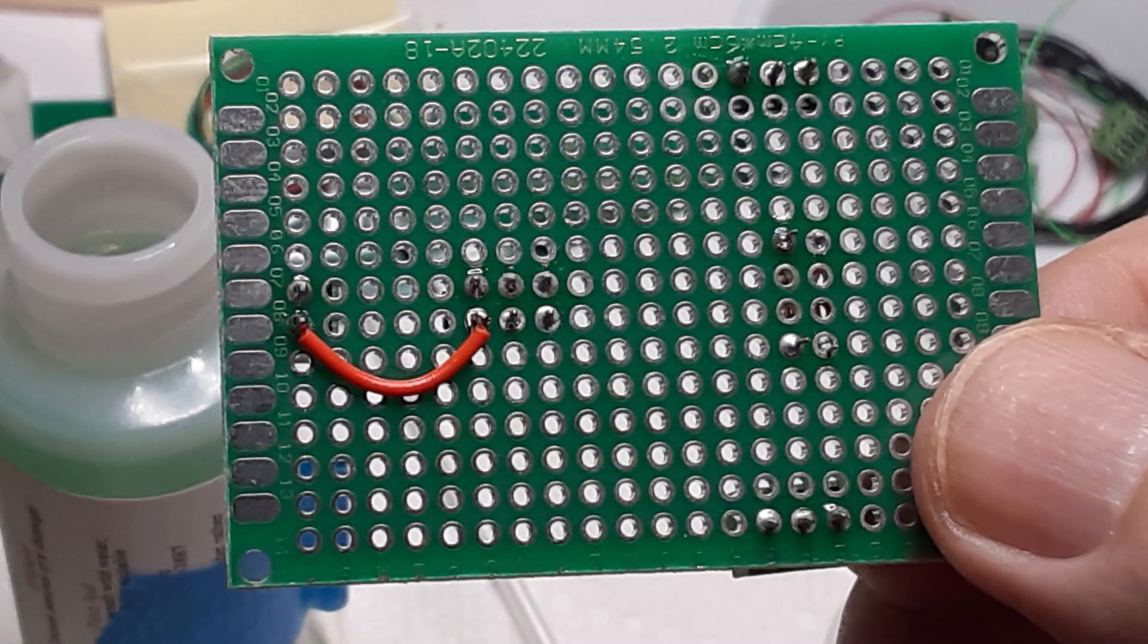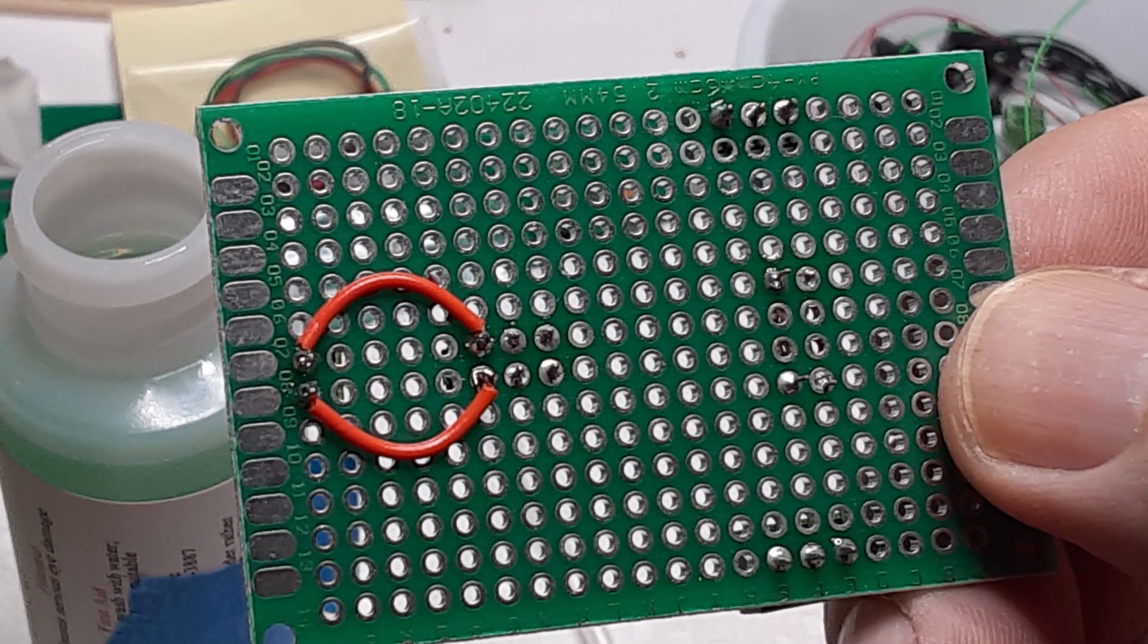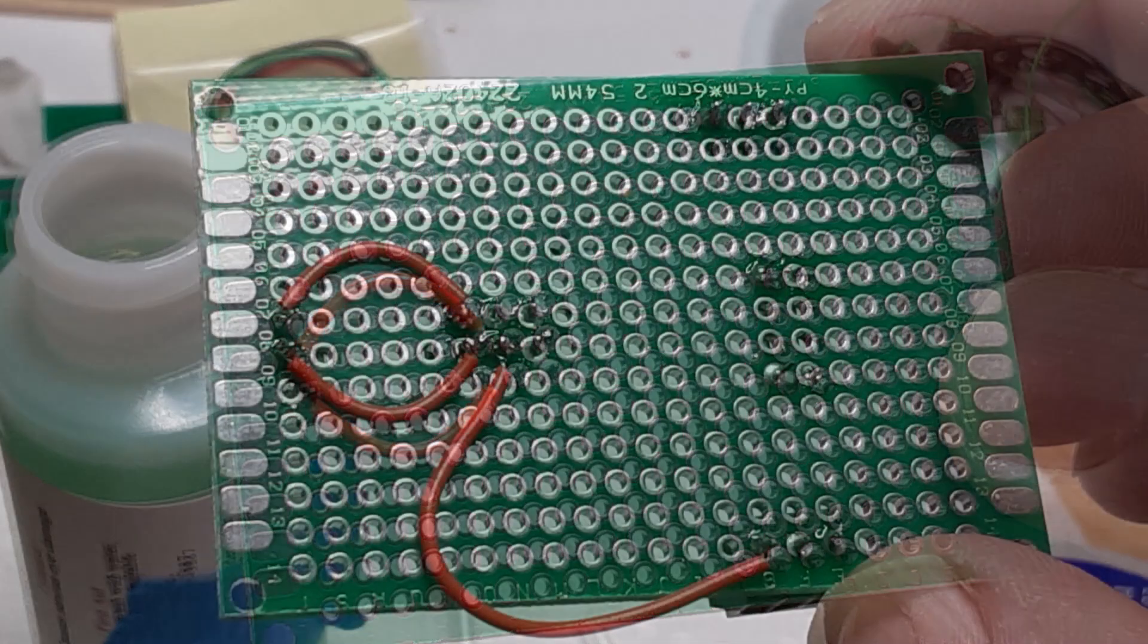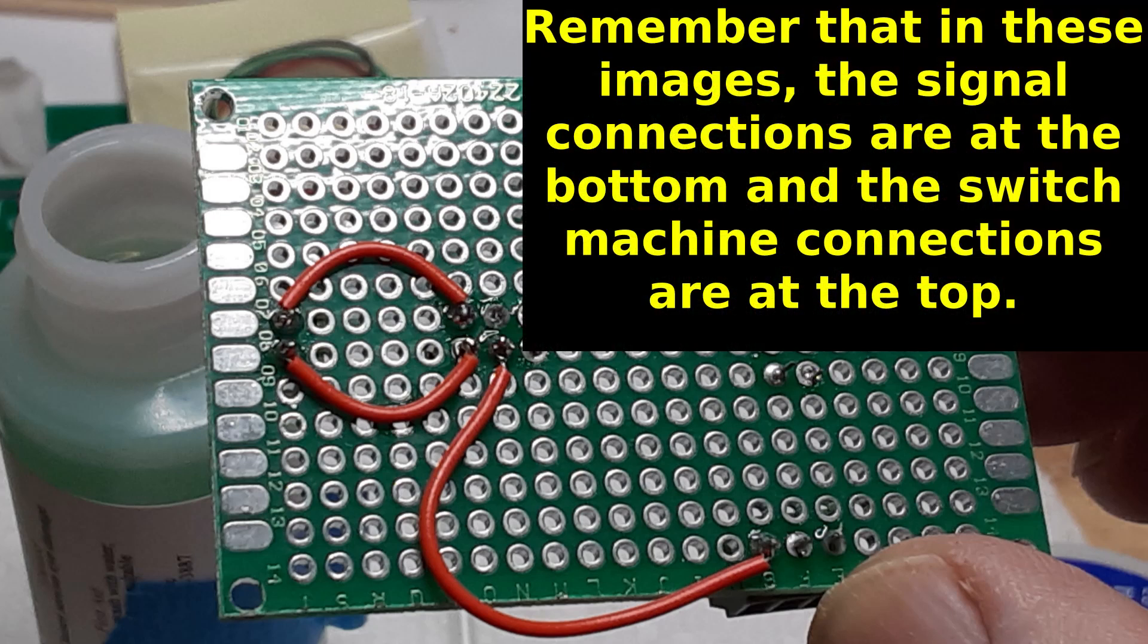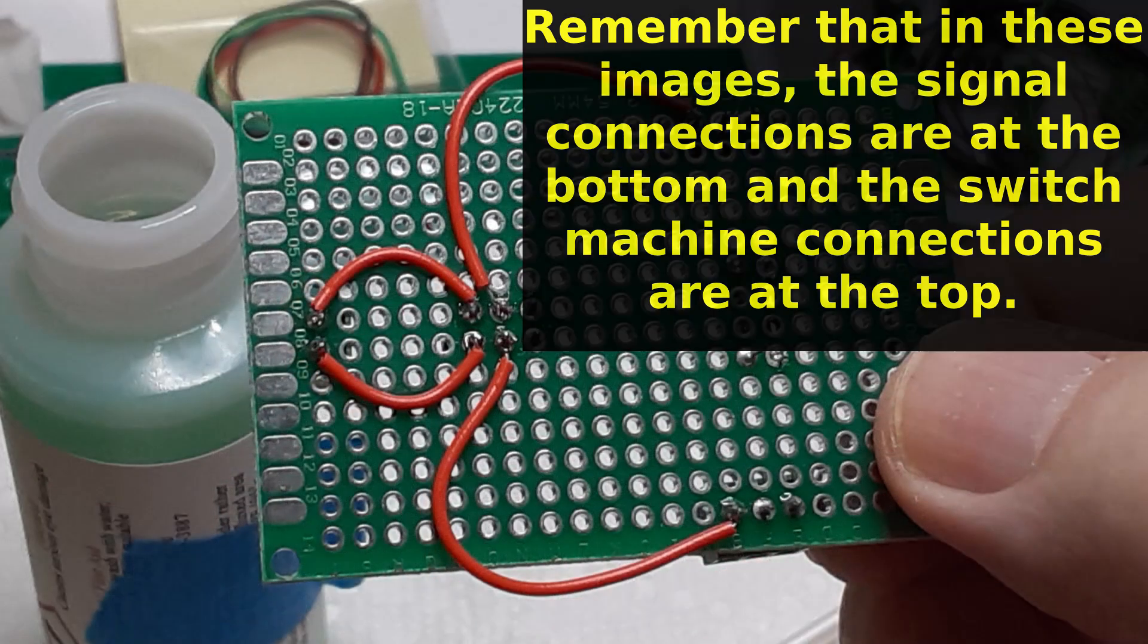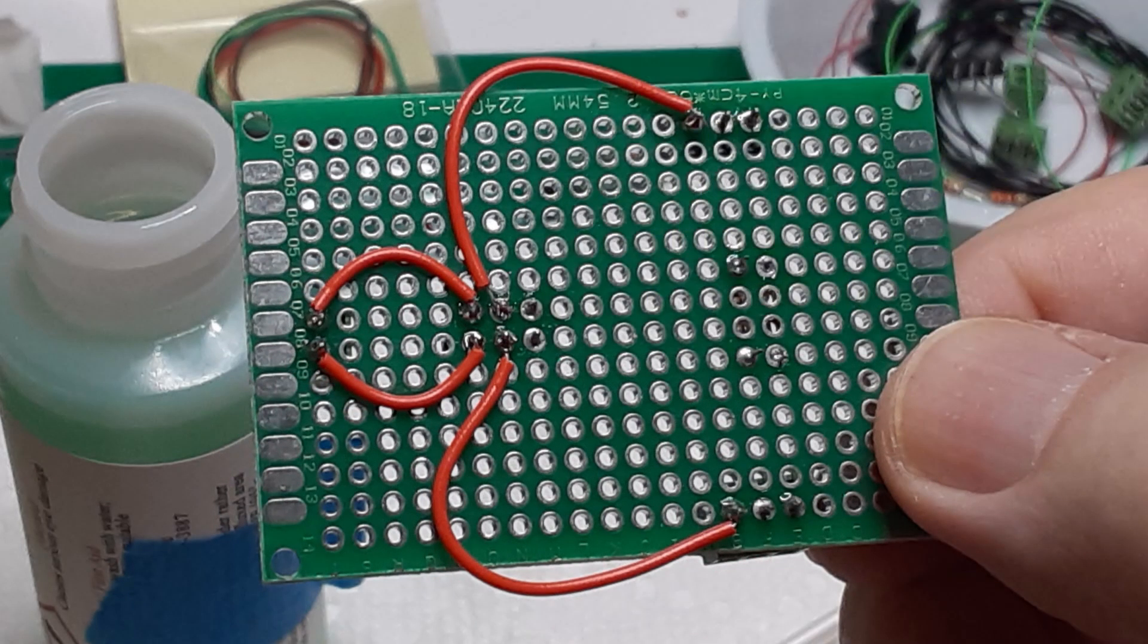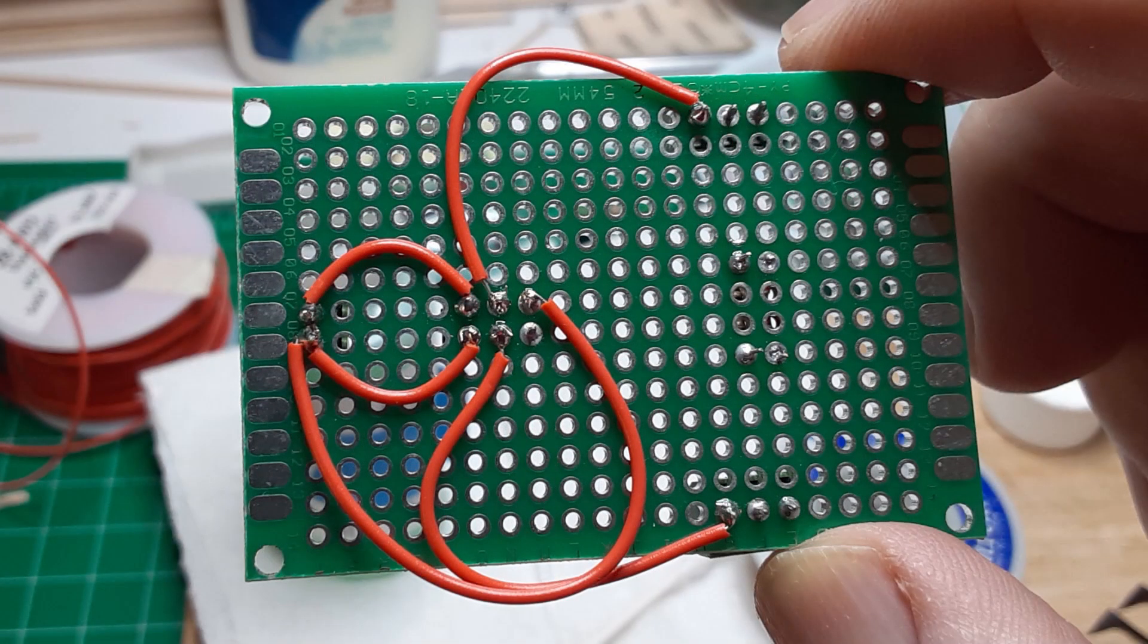Then solder the following 12 connections using solid 28-gauge wire. Connect the plus 12-volt pin to the DPDT pin at lower left. Connect the ground to the DPDT pin at the upper left. Connect the center bottom DPDT pin to the common LED pin. Connect the center top DPDT pin to the switch machine common pin.